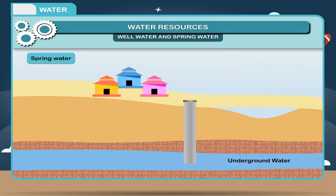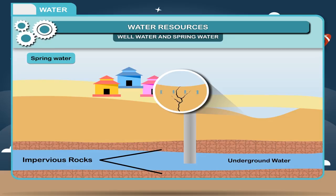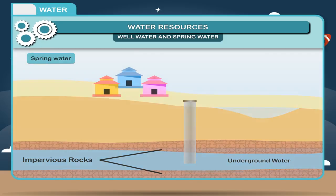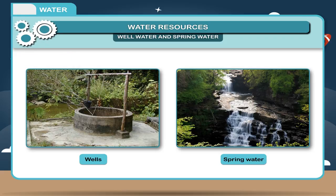Spring water: The underground water flowing parallel to impervious rocks comes out as a spring where the layers of soil above it are reduced. At certain places, the underground water exerts pressure and comes out through cracks on the earth's surface. Both well and spring water are rich in dissolved mineral salts and are free from suspended impurities, as this water undergoes filtration while passing through layers of sand and gravel.